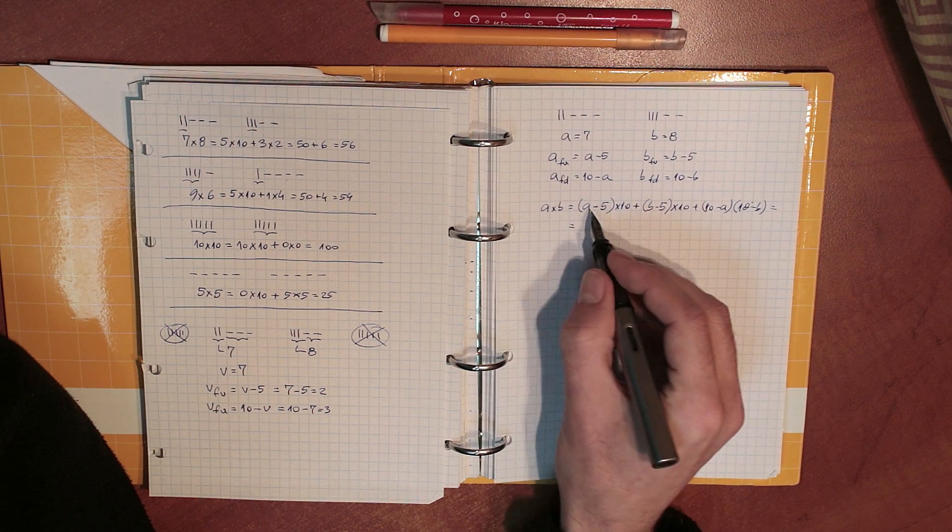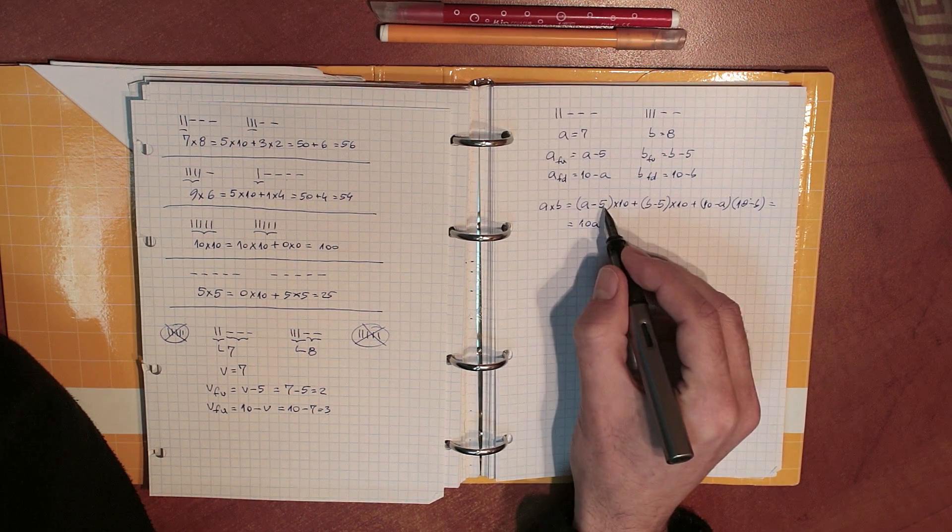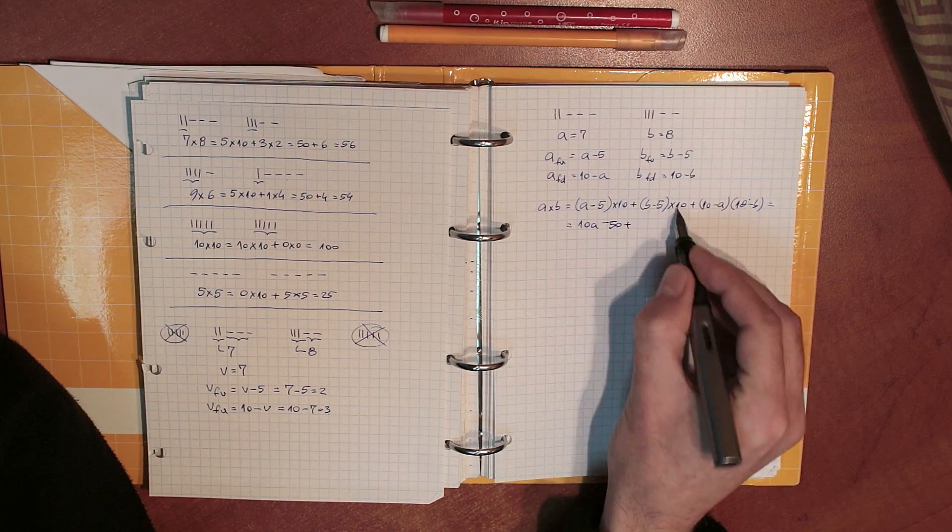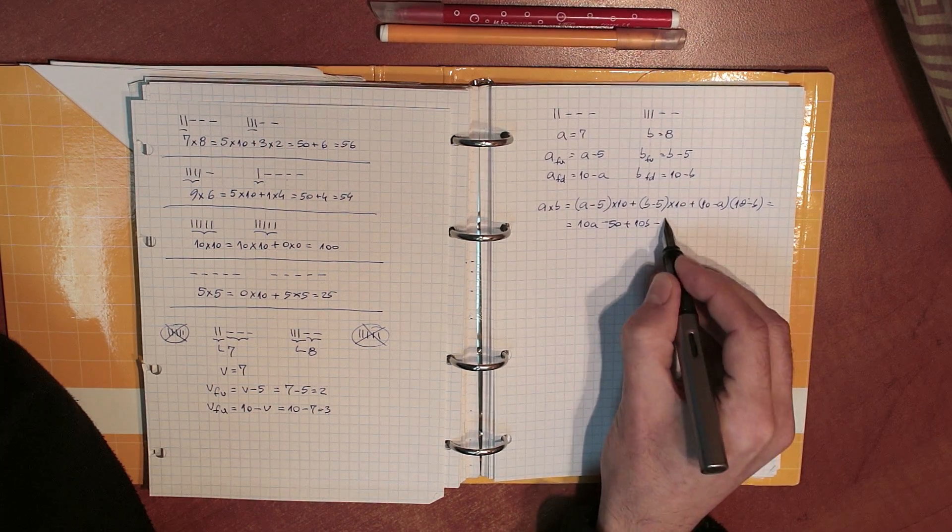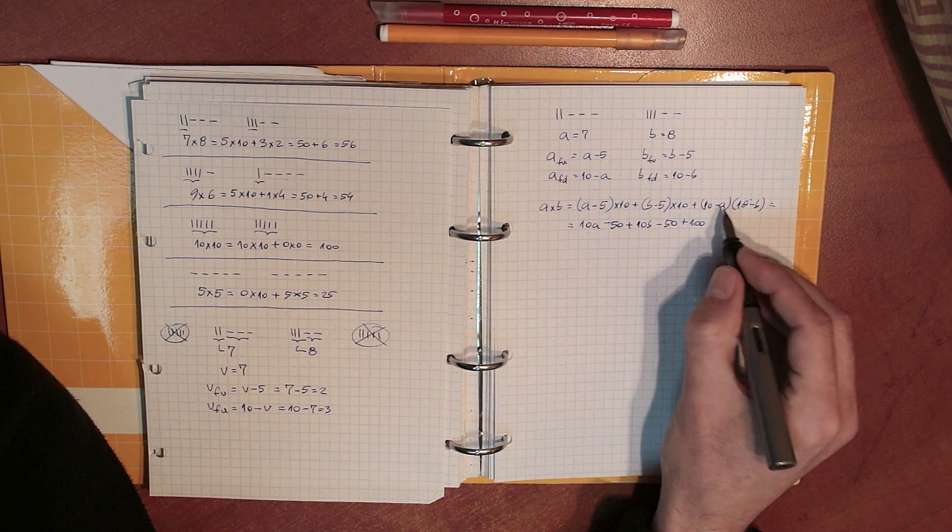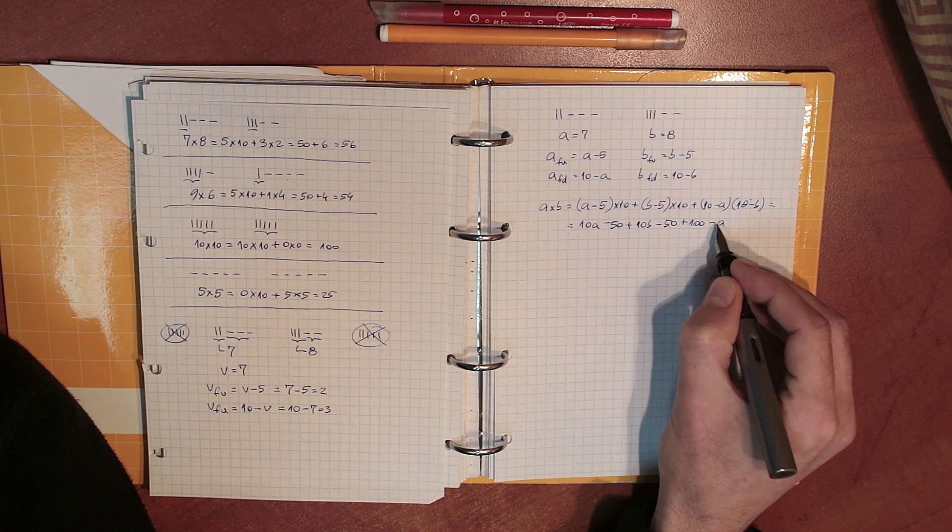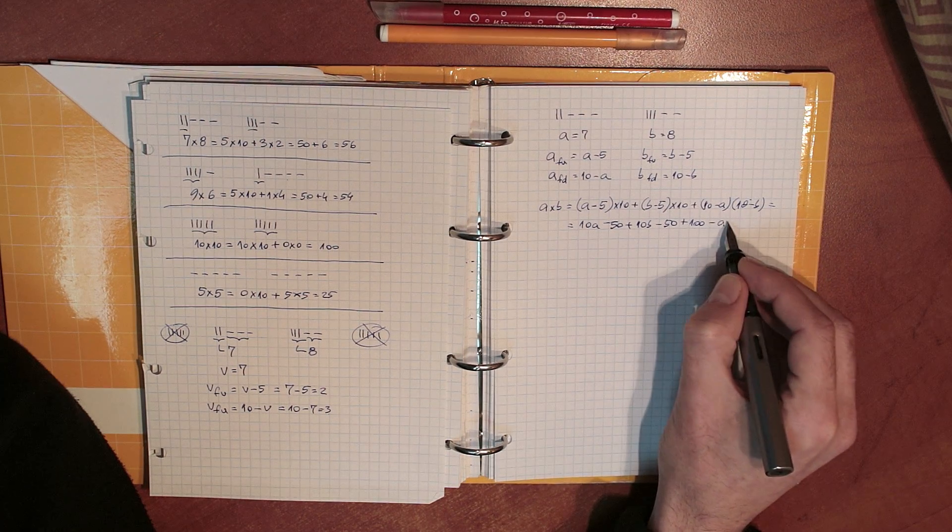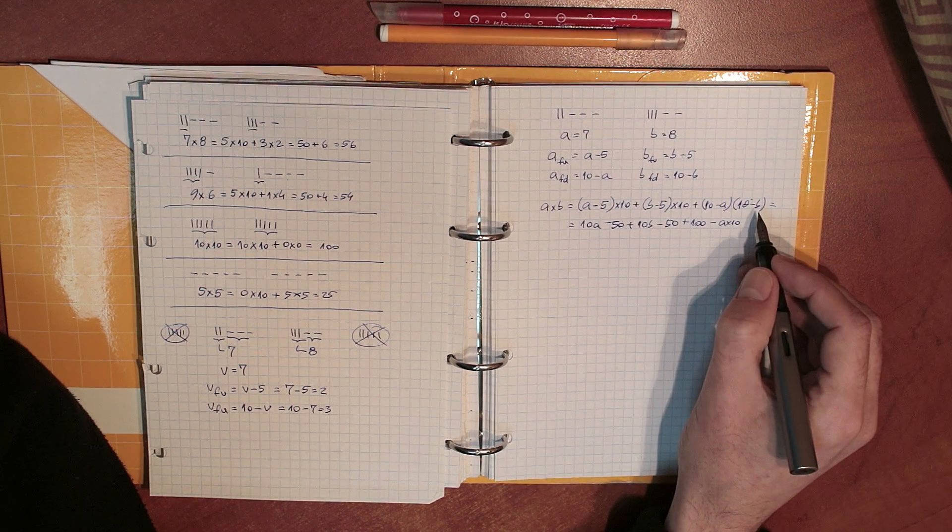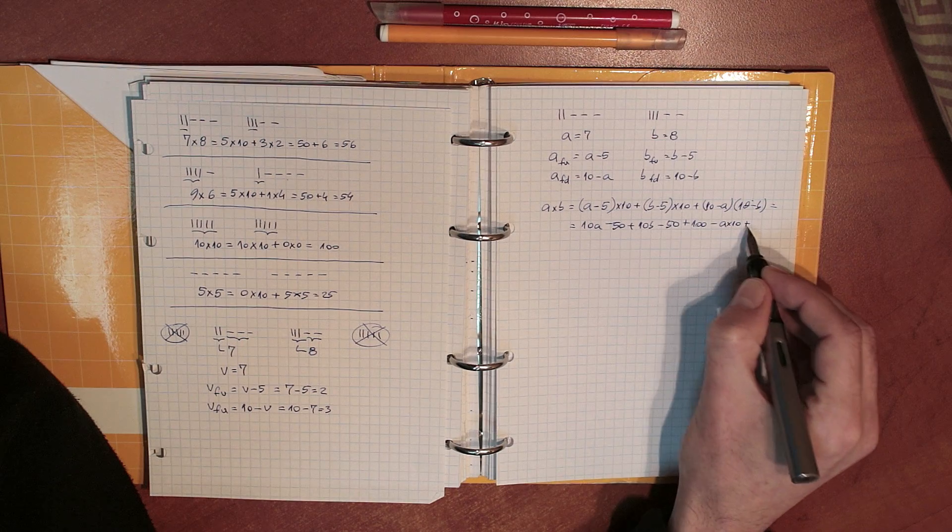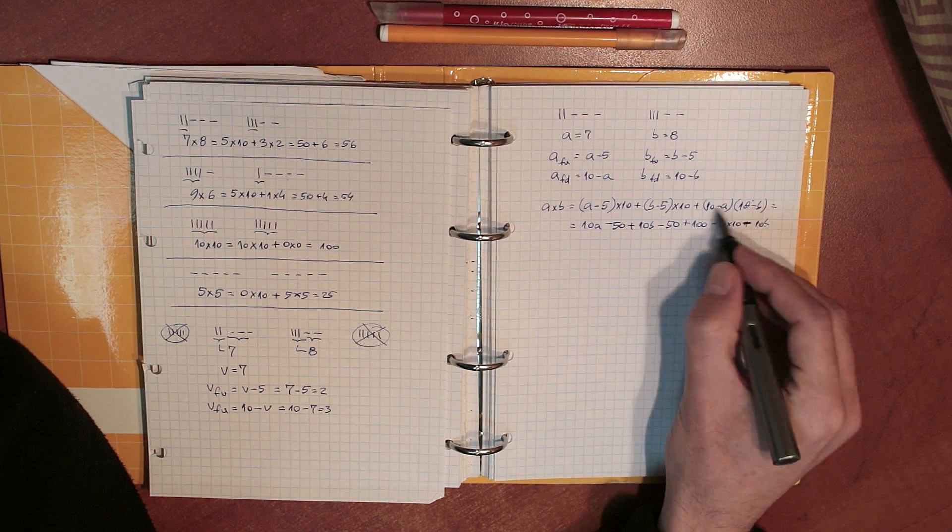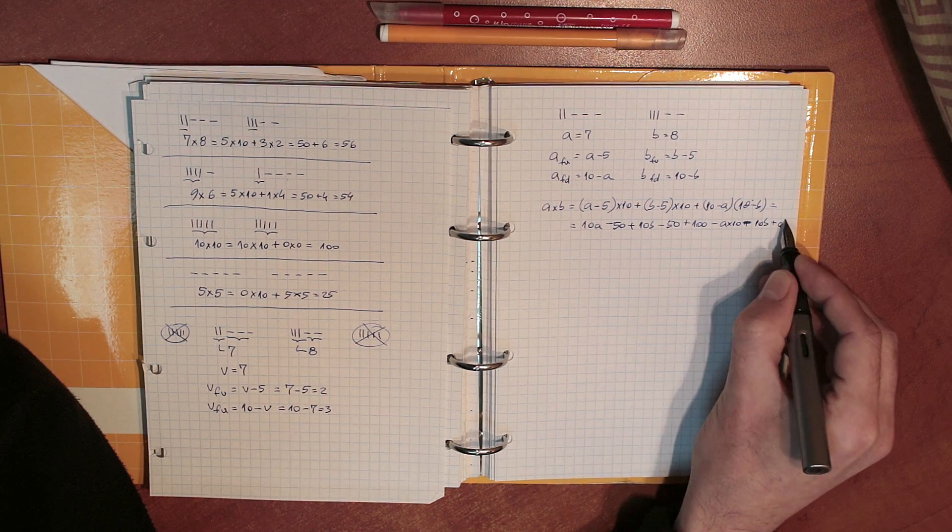So what does this whole thing equal? Well, A times 10 is 10A, minus 5 times 10 is minus 50, B times 10 is 10B, minus 50 from this guy, and then 10 times 10 is 100, minus A times 10, which is minus 10A, and then I'm doing minus 10B, and then plus AB, minus A times minus B is plus AB.